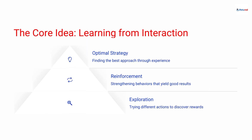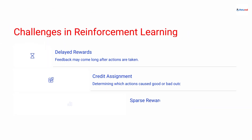At its heart, reinforcement learning is all about learning from interaction. The agent explores, receives feedback, and refines its behavior, gradually discovering the optimal strategy through continuous trial and error. However, RL is not without challenges. Rewards can be sparse or delayed, making it difficult to pinpoint which actions led to success or failure — a problem known as credit assignment. Researchers have dedicated decades to overcoming these hurdles.